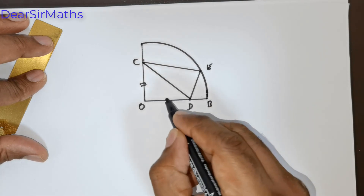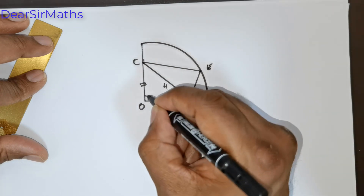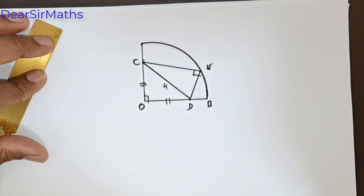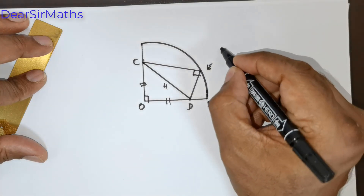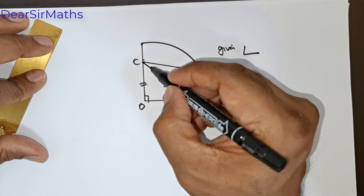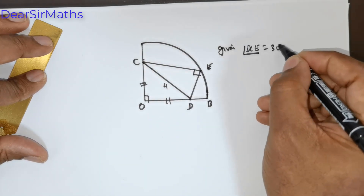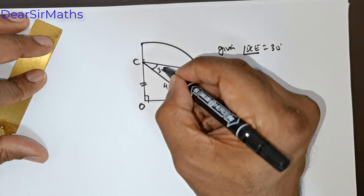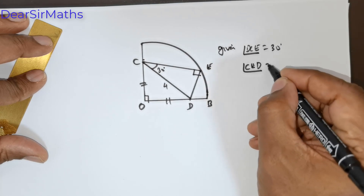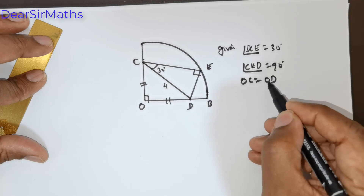These two sides are given to be equal. This length is 4 units. This is 90 degrees and this is 90 degrees. Given that DCE is 30 degrees and CED is 90 degrees.